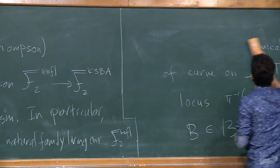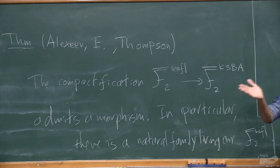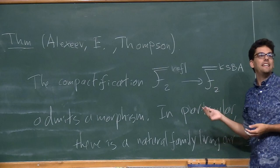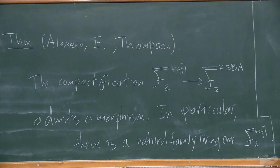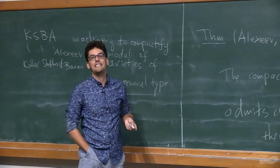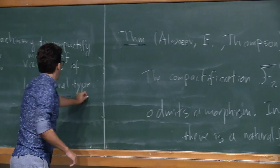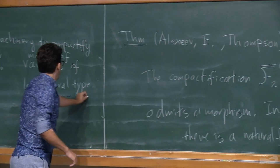The main theorem, joint with Thompson, is that the compactification F̄₂ associated to the reflection group admits a morphism to the KSBA compactification. In particular, there's a natural family living over this toroidal compactification. There's a morphism, and there are some positive-dimensional fibers on the boundary of dimensions 0, 1, 2, or 3, and we know what gets contracted. It fits into the general framework, and you can also concretely describe the objects that live over the boundary.